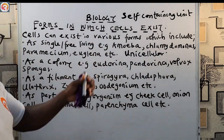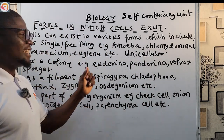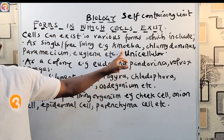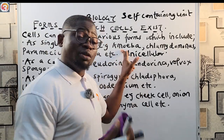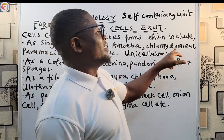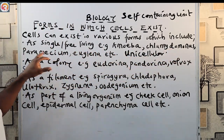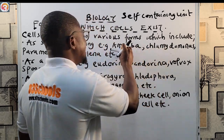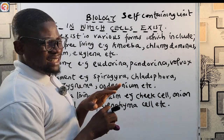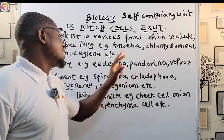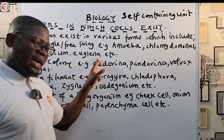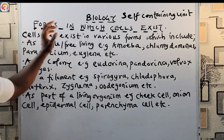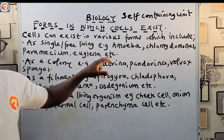Examples of single or free living unicellular organisms include: Amoeba, Chlamydomonas, Paramecium, and Euglena. These are the most common ones you should know. They exist at the cell level — they are single and free living.